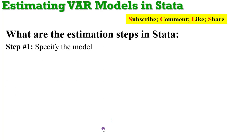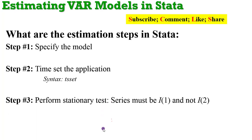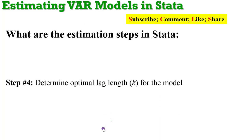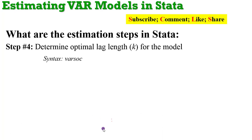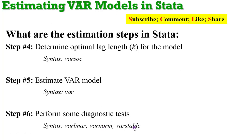Step one: make sure you correctly specify the model. Step two: time-set the Stata application using the appropriate syntax — if you don't do that, Stata will not perform your time series analysis. Step three: perform stationarity tests, making sure that the series are all integrated of order one and not of order two. You can use Dickey-Fuller, Phillips-Perron, or DF-GLS. Step four: determine the optimal lag length using the varsoc command. Step five: estimate the VAR model using the var command. After that, perform diagnostic tests for autocorrelation, normality, and stability.